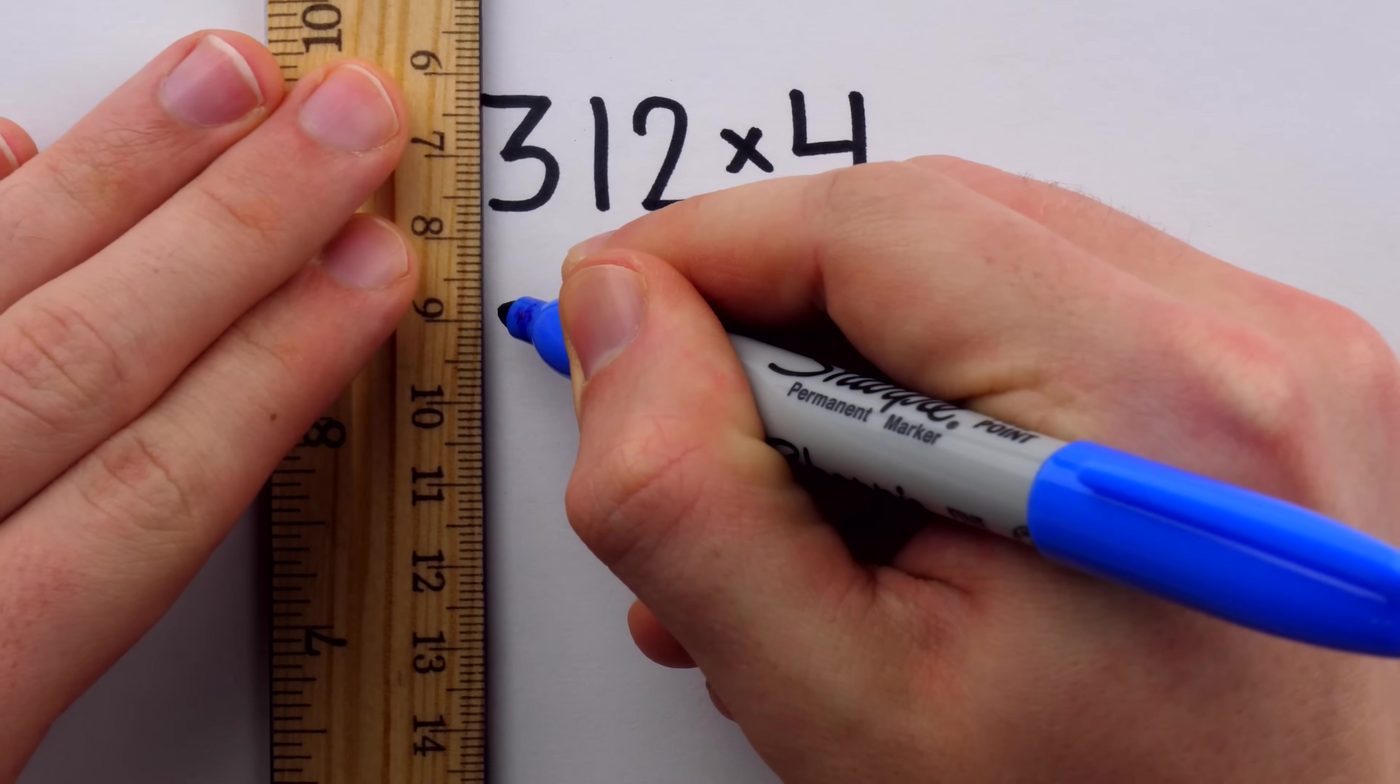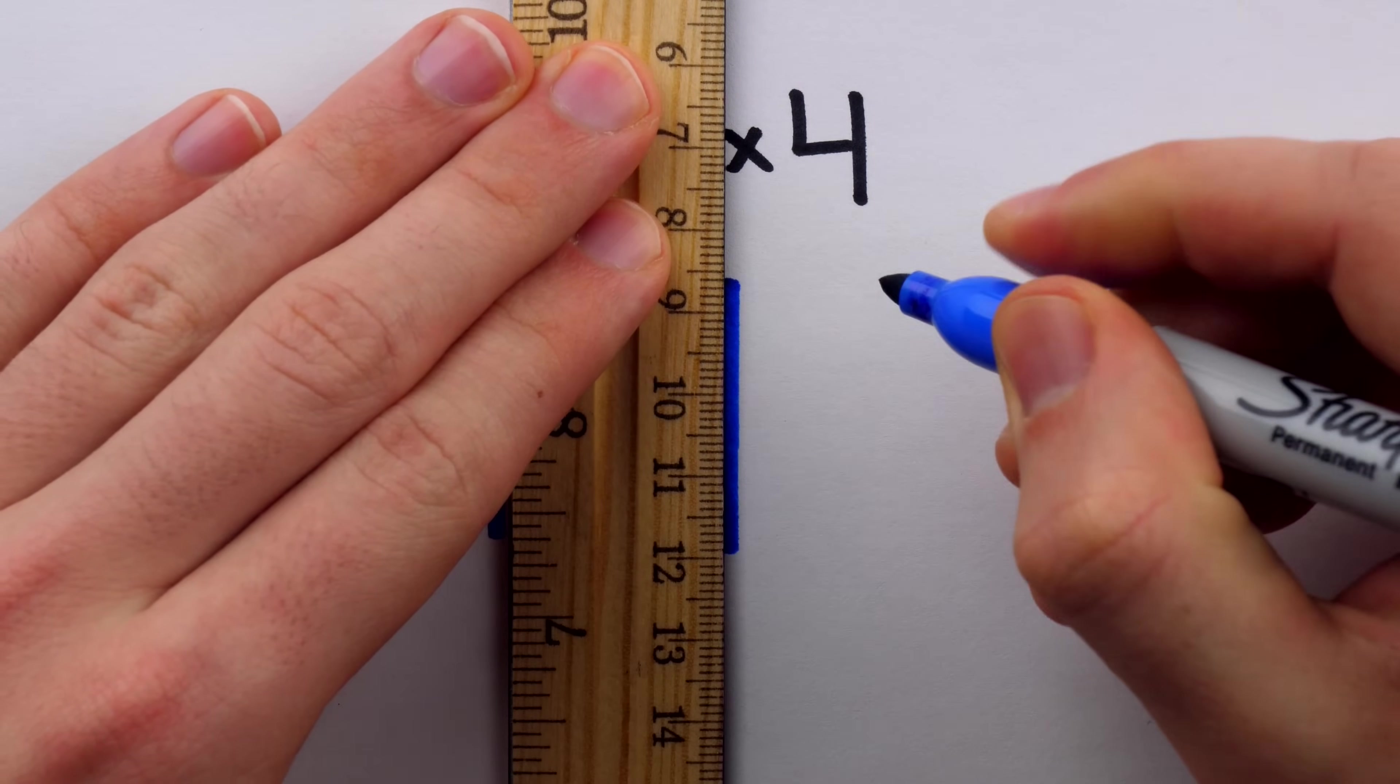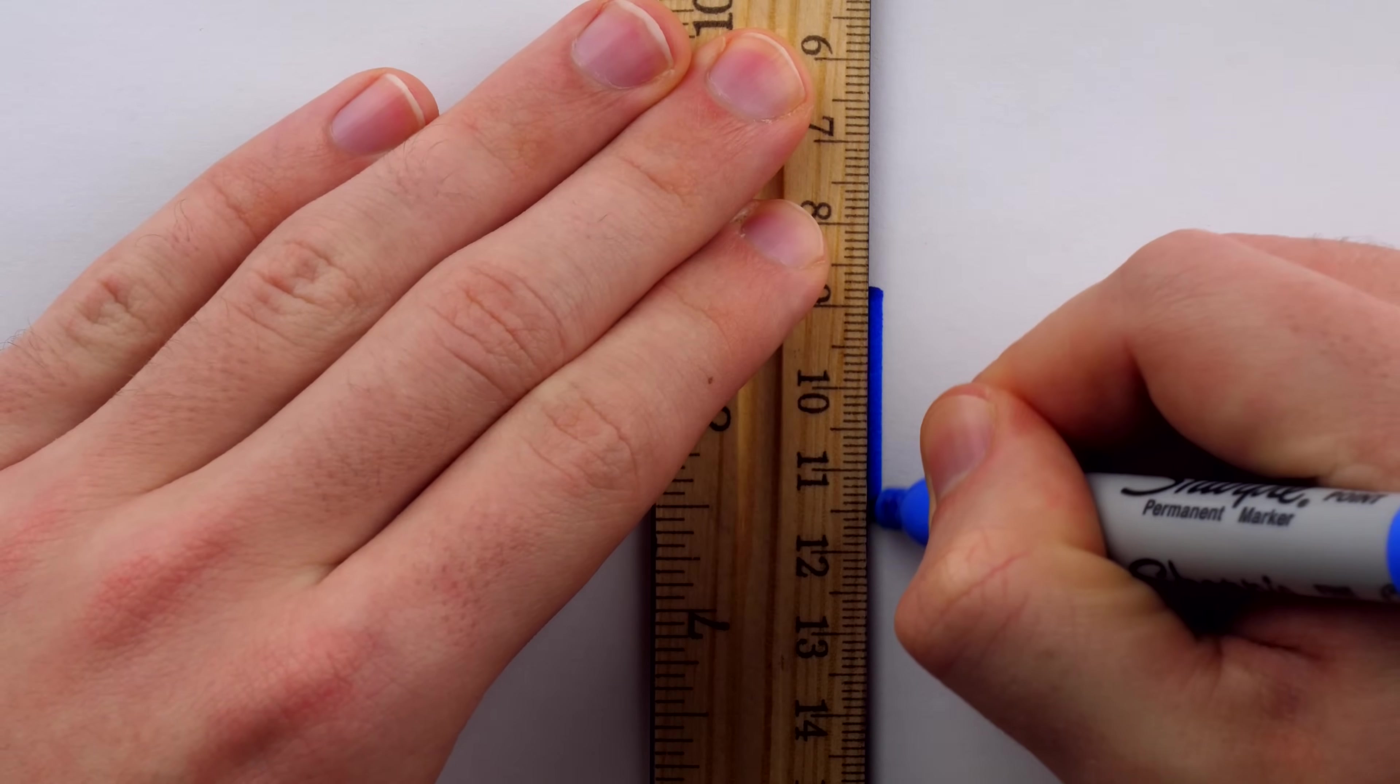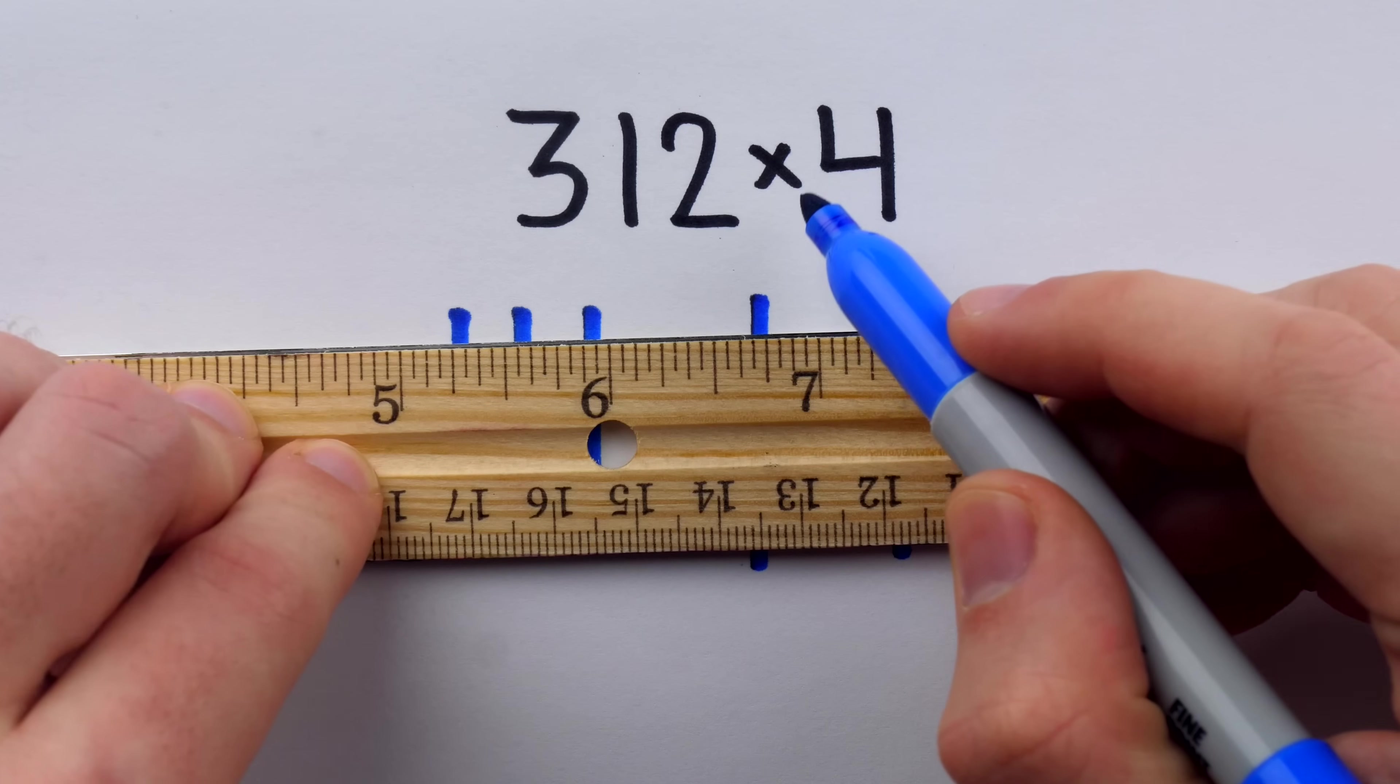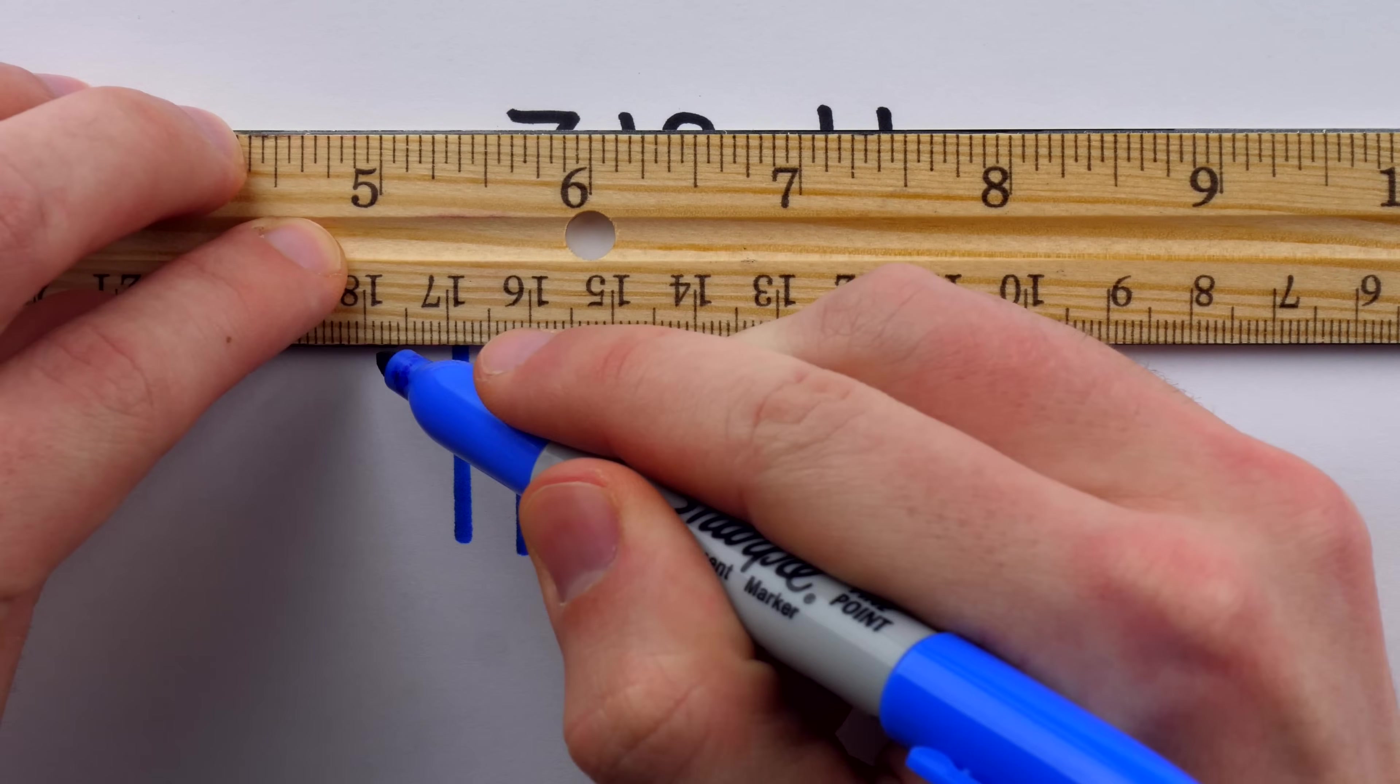Three vertical lines for the 300s, one vertical line for the 10, and then two vertical lines for the two units. And then, since we're multiplying by four, we draw four horizontal lines.